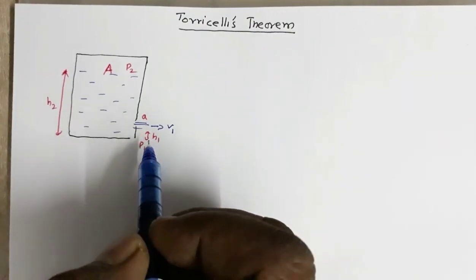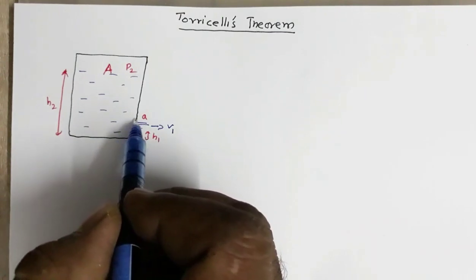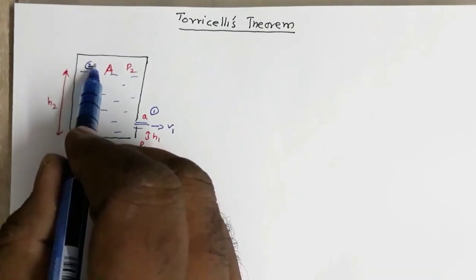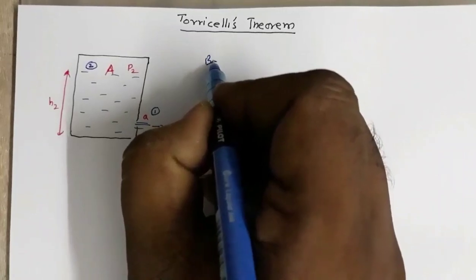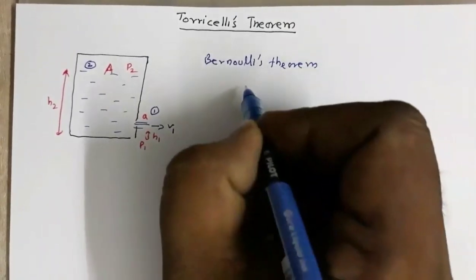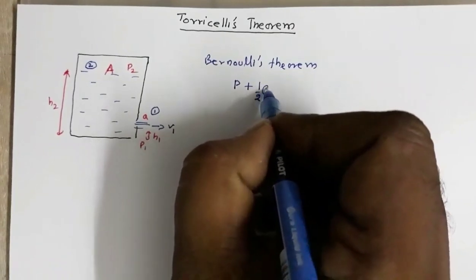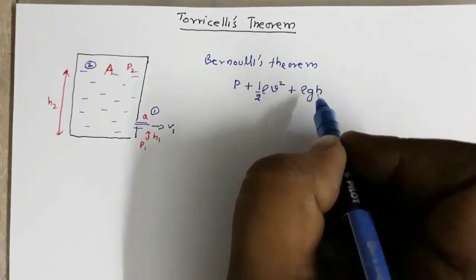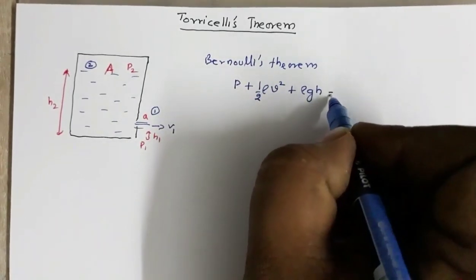I have taken this region and I am identifying this region as region 1 and the top surface as region 2. From Bernoulli's theorem, we have the sum of pressure plus kinetic energy per unit volume plus potential energy per unit volume — this sum is constant.